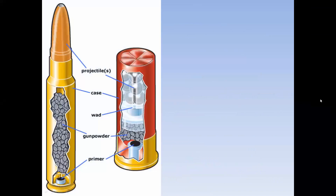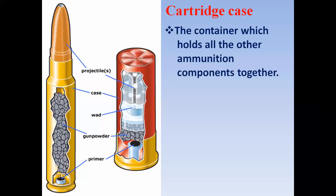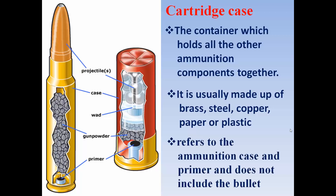What are cartridge cases? A cartridge case is a container which holds the primer, propellant, and bullet — it holds all the components of ammunition together. It is usually made up of brass, steel, copper, paper, or plastic. The term cartridge case refers only to the ammunition case and primer, and does not include the propellant or the bullet.